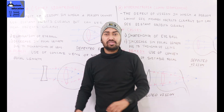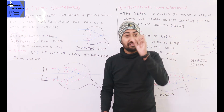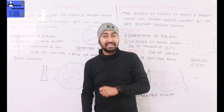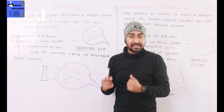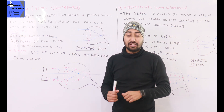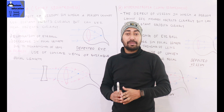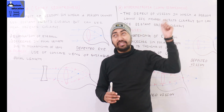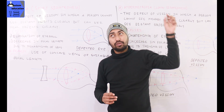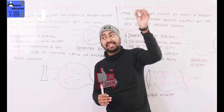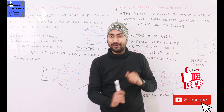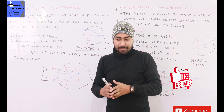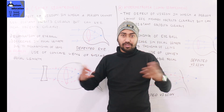So to recap: if a convex lens is used, it corrects hypermetropia or long-sightedness. The definition of hypermetropia is long-sightedness, and myopia is short-sightedness.